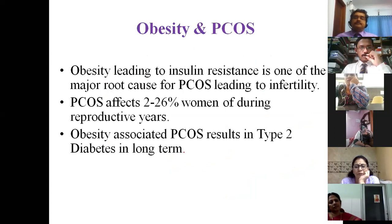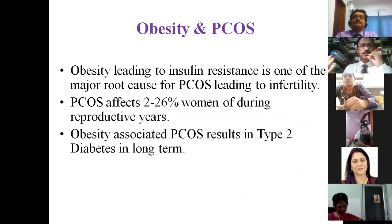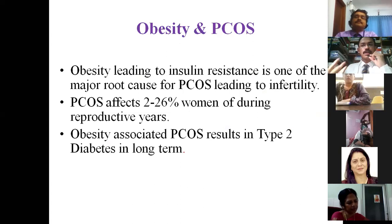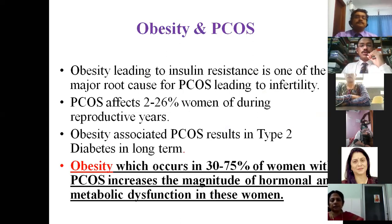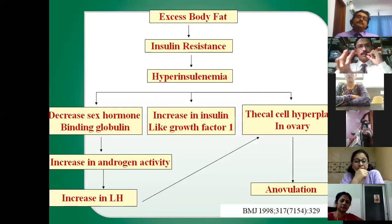Obesity is a common manifestation in PCOS women. PCOS is a common reproductive tract disorder affecting 22 to 26 percent of women of reproductive lifespan. Obesity is particularly a risk factor for type 2 diabetes mellitus, especially for Asian and Indian women who are predisposed to type 2 diabetes and gestational diabetes mellitus even at normal body weight. In PCOS, 30 to 75 percent of women are obese depending on ethnicity, and obese women face significantly higher reproductive and metabolic complications.